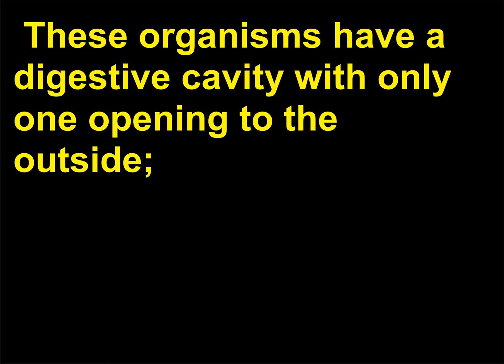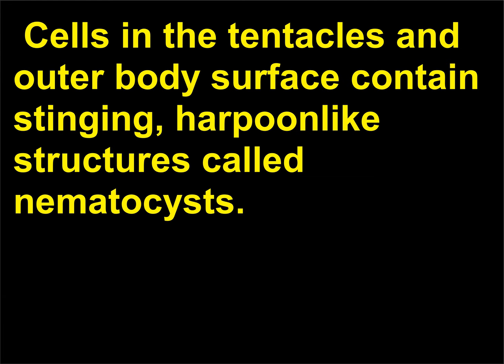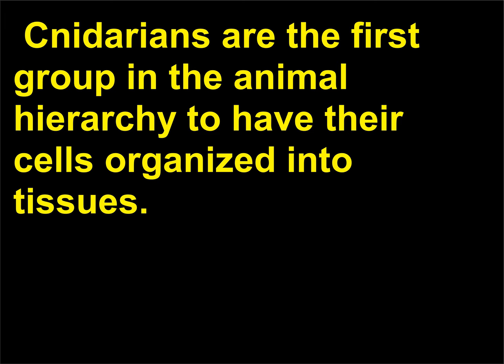These organisms have a digestive cavity with only one opening to the outside. This opening is surrounded by a ring of tentacles used to capture food and defend against predators. Cells in the tentacles and outer body surface contain stinging, harpoon-like structures called nematocysts. Cnidarians are the first group in the animal hierarchy to have their cells organized into tissues.